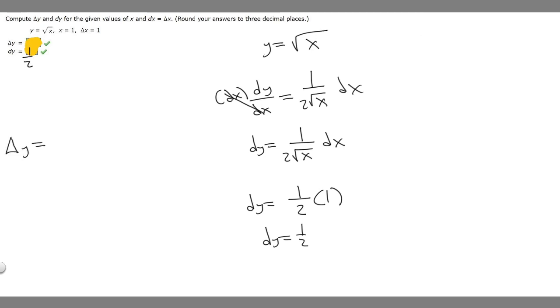So delta y equals f of x plus delta x minus f of x. So this is the formula you're going to use to find delta y. Delta y equals, so f is just our function.